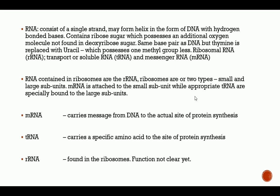RNA consists of a single strand and may form a helix similar to DNA with hydrogen-bonded bases. It contains ribose sugar, which has an additional oxygen molecule not found in deoxyribose sugar. RNA uses the same base pairs as DNA, but thymine is replaced with uracil, which possesses one methyl group less. There are three categories of RNA: ribosomal RNA, transfer (or soluble) RNA, and messenger RNA. The mRNA carries the message from DNA to the actual site of protein synthesis, and transfer RNA carries a specific amino acid to the site of protein synthesis.